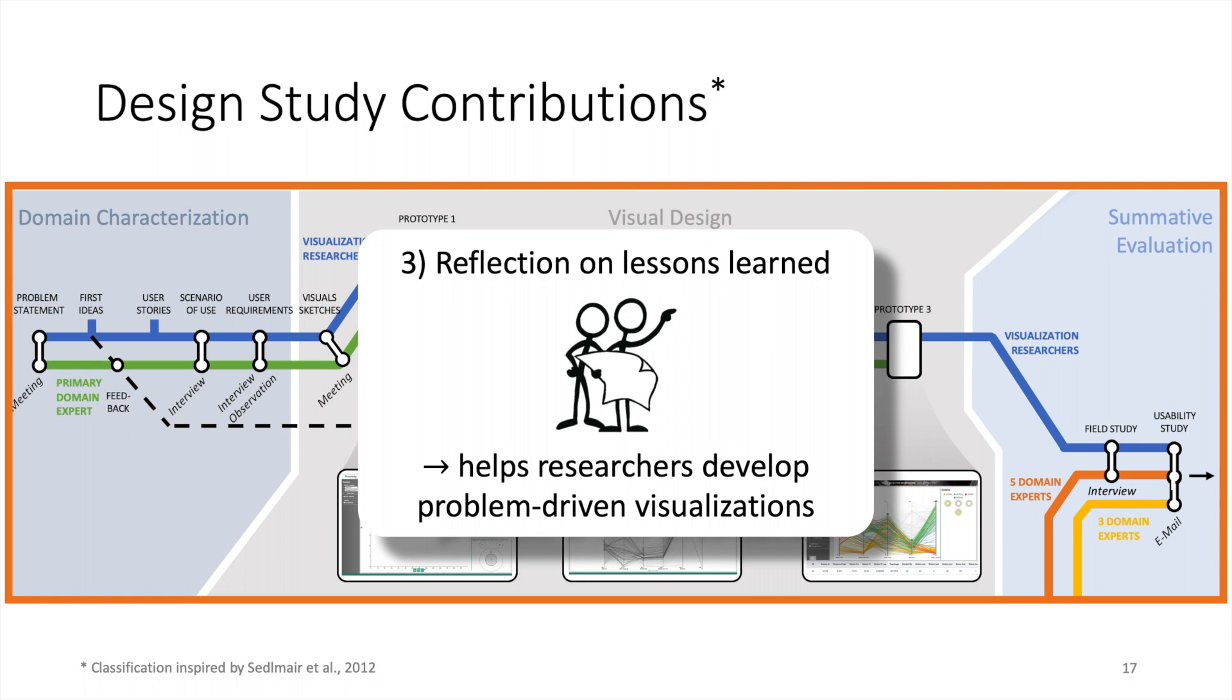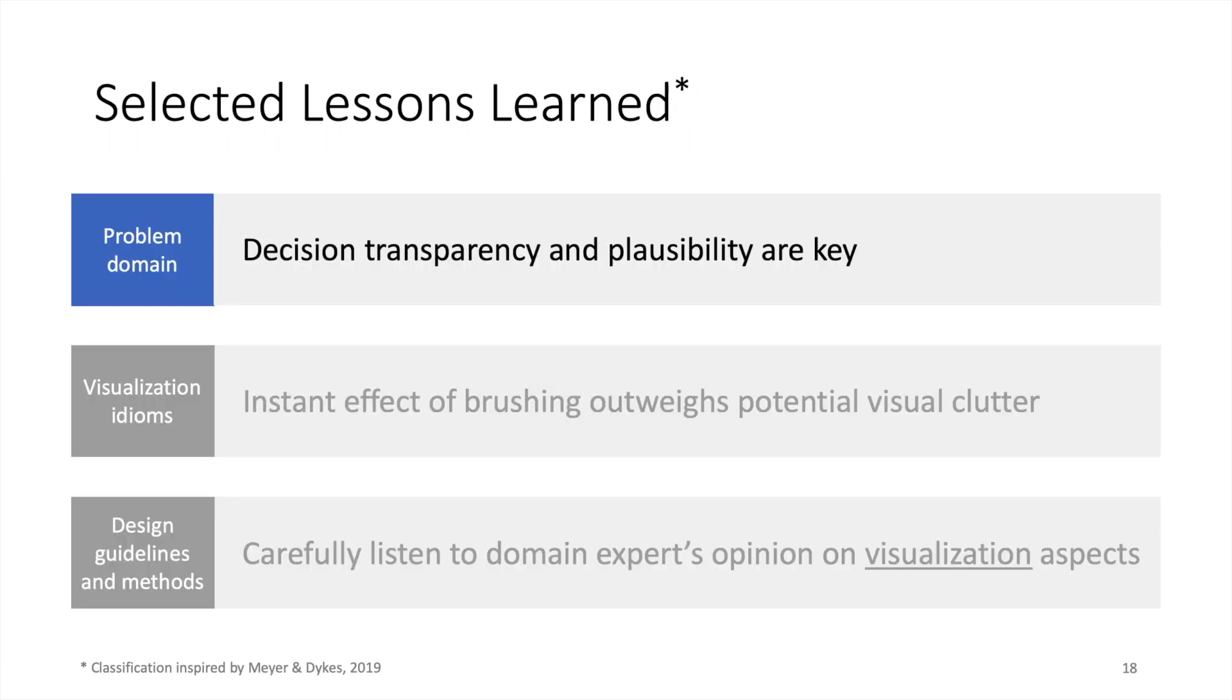Finally, we will reflect on our lessons learned, by which we aim to relate our design study to the larger area of problem-driven visualization. For the problem domain, we learned that transparency is key. For motor designers, it might have a particularly high priority because their customers actually pay for their decisions and they should only need to pay for something they can understand. We also realized that the domain experts quickly adopted the parallel coordinates for their real-world tasks. They particularly appreciated that they could immediately observe the effect of modifying the brushes on the availability of options.